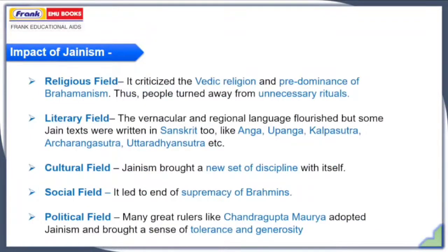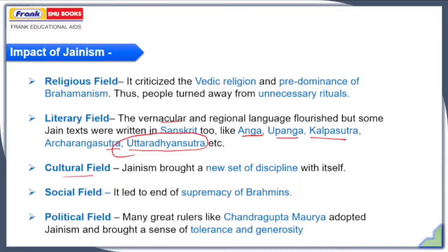Coming to the impacts of Jainism: in the religious field, it criticized the Vedic religion, the authority of Brahmans, and the predominance of Brahmanism, turning people away from unnecessary rituals. In the literary field, it led to the flourishment of vernacular and regional languages, as well as Sanskrit, because Jain texts like Anga, Upanga, Kalpasutra, Acharangasutra, and Uttaradhyayana Sutra are written in Sanskrit. In the cultural field, Jainism brought a new set of discipline through penance, asceticism, non-violence, and tolerance. In the social field, it led to the end of the supremacy of Brahmanism. In the political field, many great rulers like Chandragupta Maurya adopted Jainism and brought a sense of tolerance and generosity to the statecraft of the Indian subcontinent.